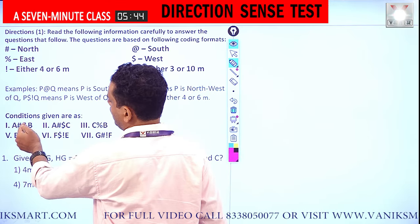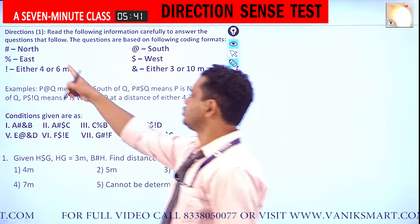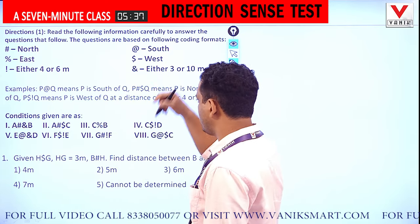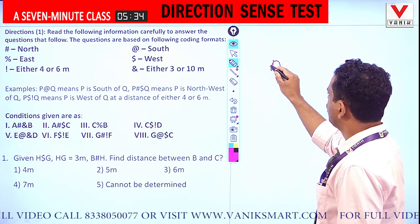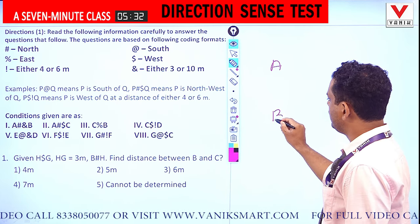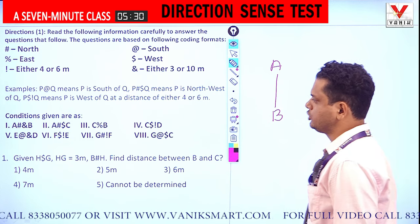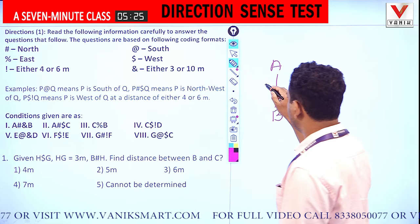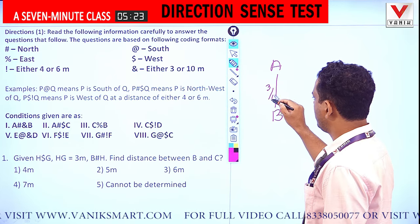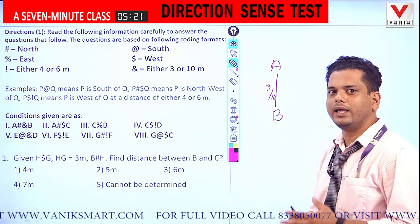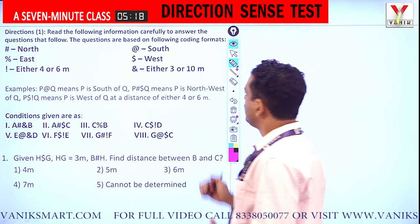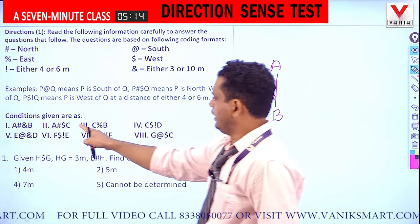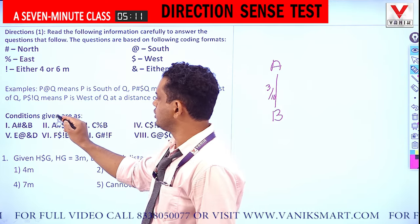First condition: A ## B. Here '#' means north, and '&' means 3 or 10. So A is north of B at a distance of 3 or 10. I am not concerned about whether it is 10 or 3 right now — I am just mapping the data as given. Next, A # means north.